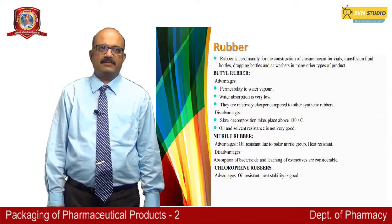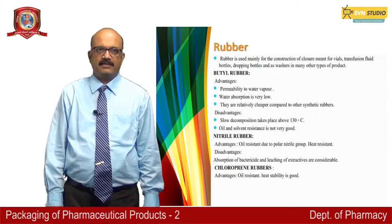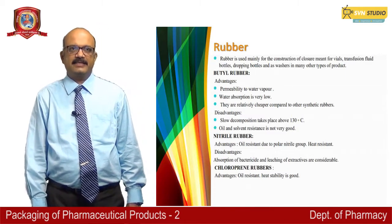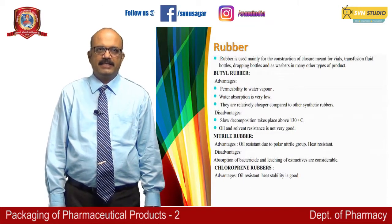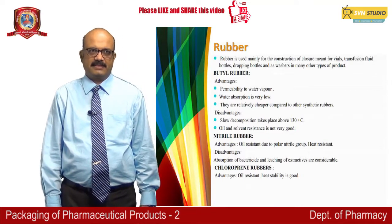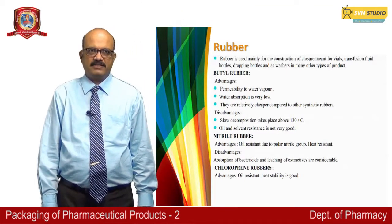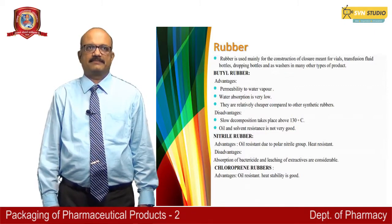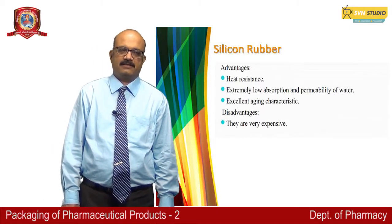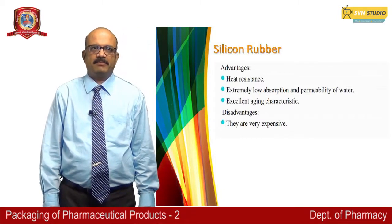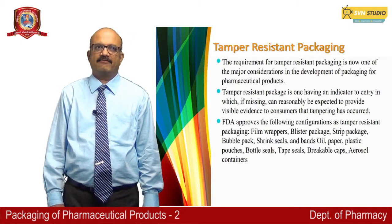Nitrile rubbers are also used, with advantages of being oil resistant due to the polar nitrile group and having heat resistance. The disadvantage is that absorption of bactericide and leaching of extractives are considerable. Chloroprene rubbers are also used, with the advantage of good oil resistance and heat stability. Silicone rubbers are used because of their heat resistance, extremely low absorption, low permeability to water, and excellent aging characteristics, but they are very expensive.